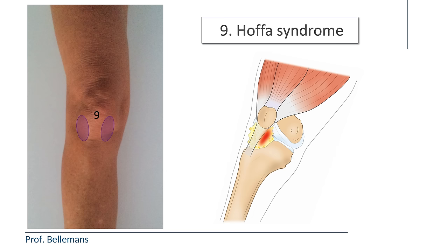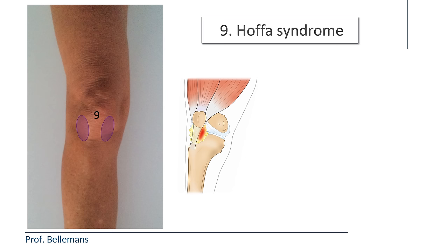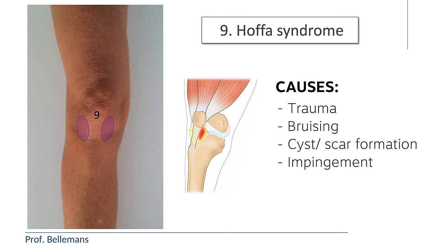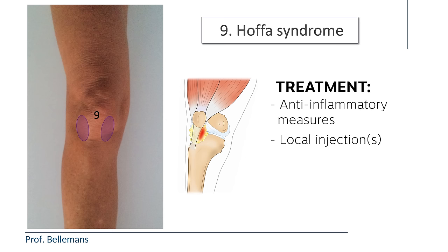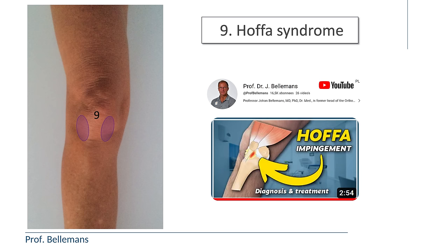9. Hoffa syndrome, also called fat pad syndrome. In Hoffa syndrome, the pain is either lateral or medial to the patellar tendon at the location of the Hoffa fat pad, which is a package of fatty tissue underneath the patellar tendon. Hoffa syndrome can be caused by a variety of factors such as trauma, bruising, cyst or scar formation, or impingement. The treatment varies and may consist of anti-inflammatory measures, local injections, physiotherapy, correction of patellar endotorsion, and sometimes even surgery.